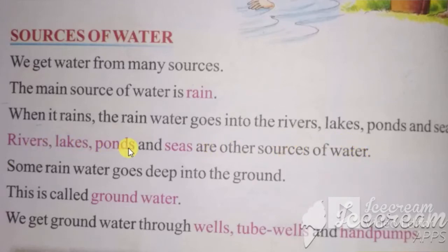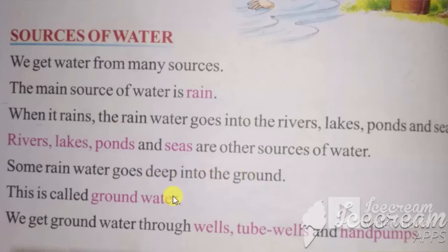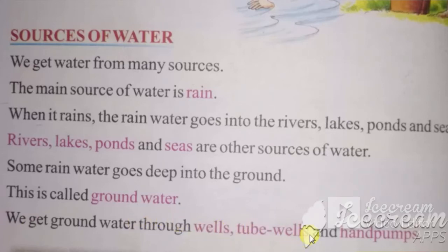Rivers, lakes, ponds, and seas are also sources of water. Some rain water goes deep into the ground — this is called ground water. We get ground water through wells, tube wells, and hand pumps.